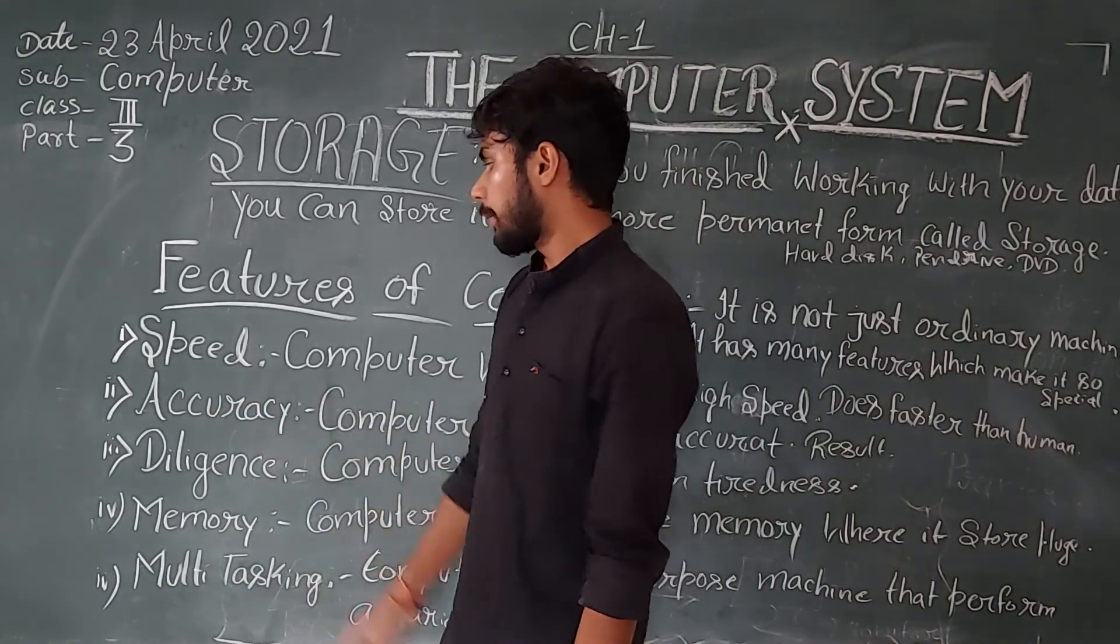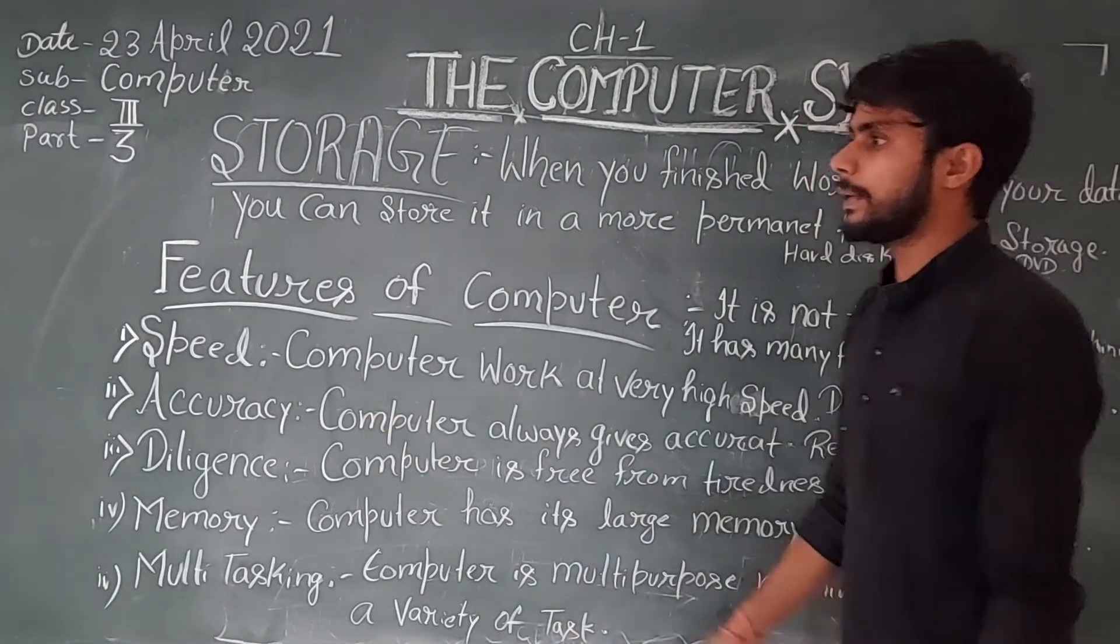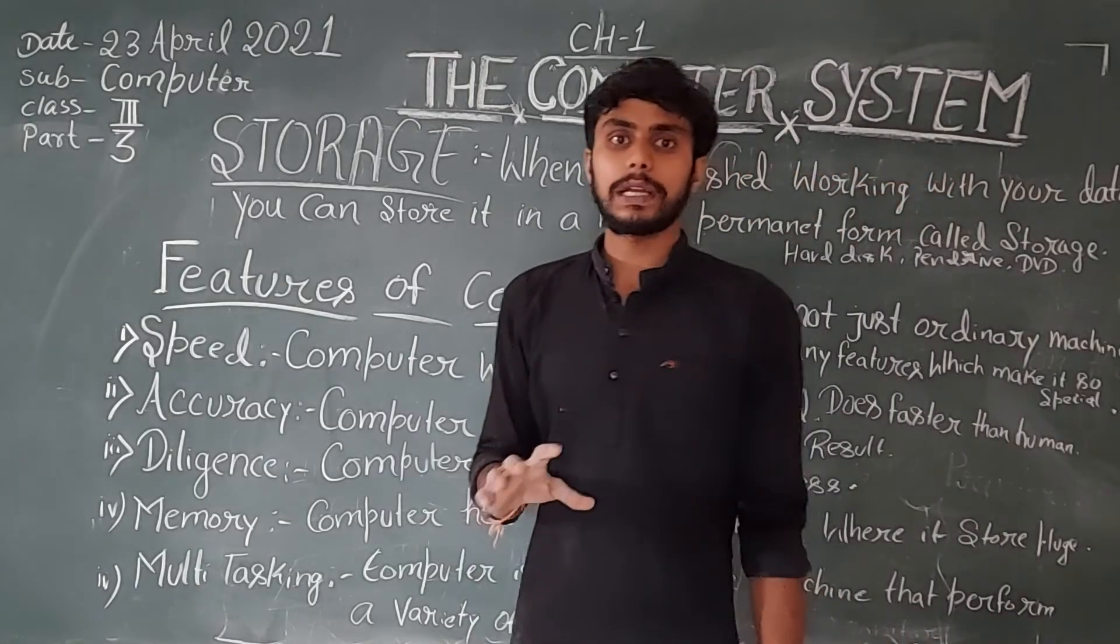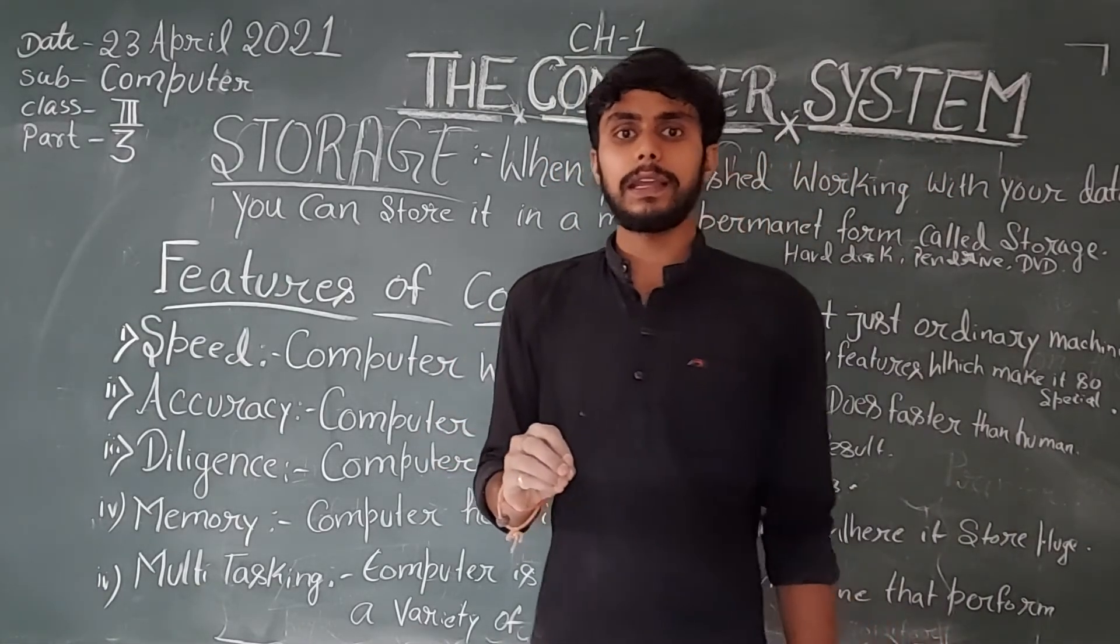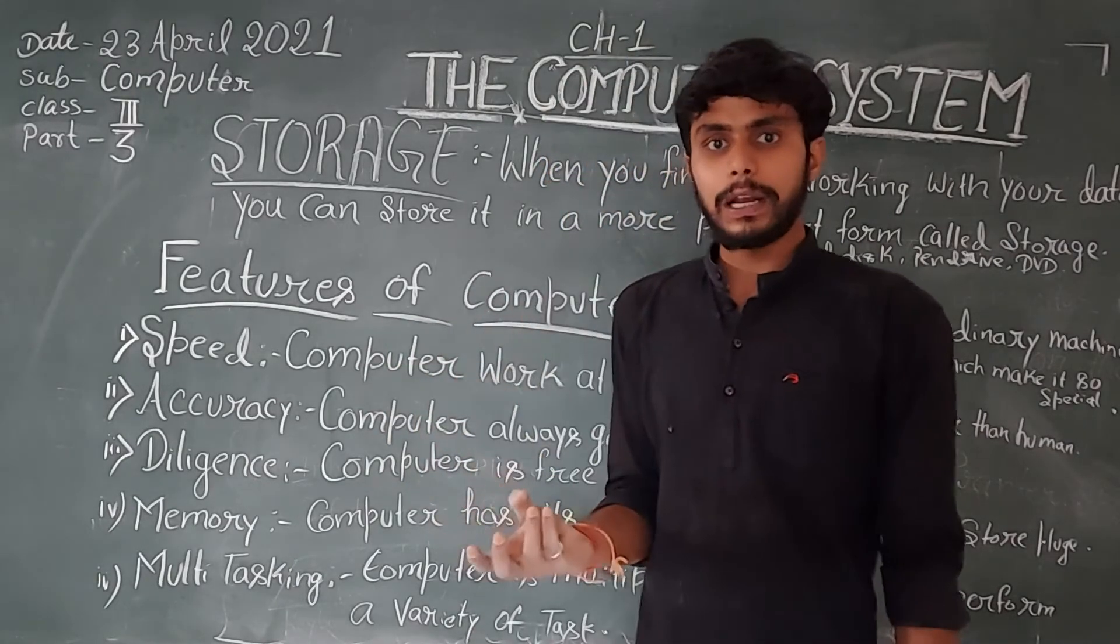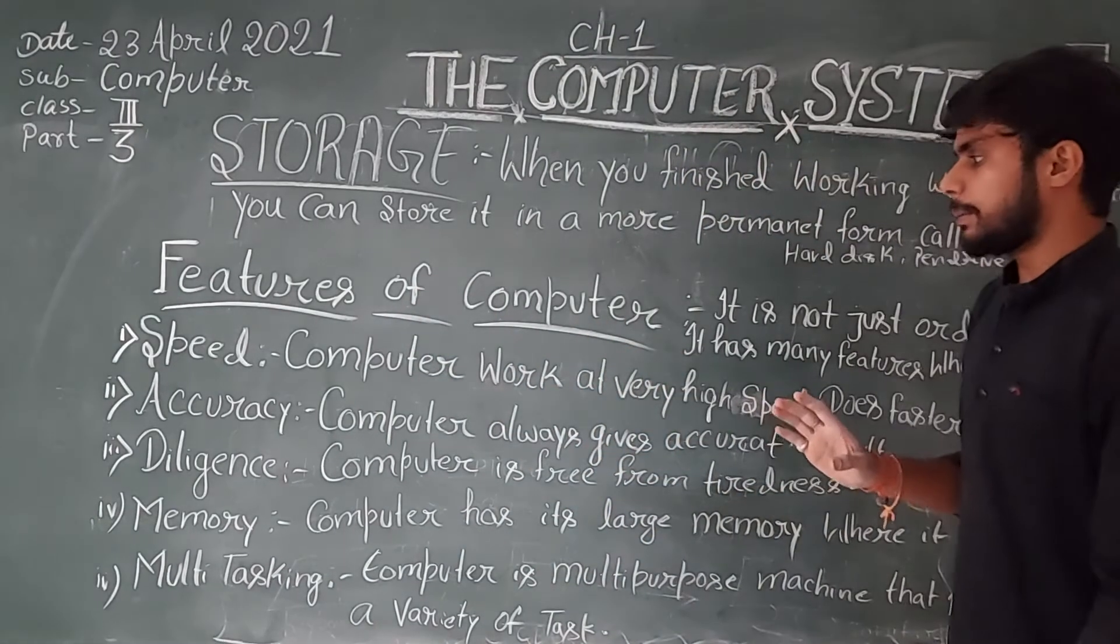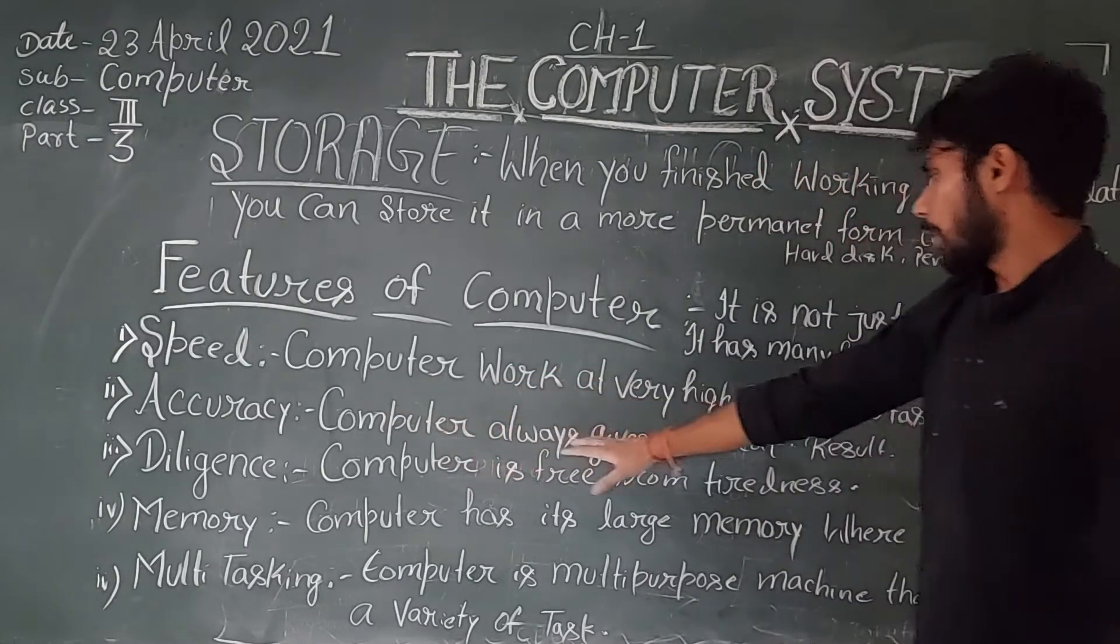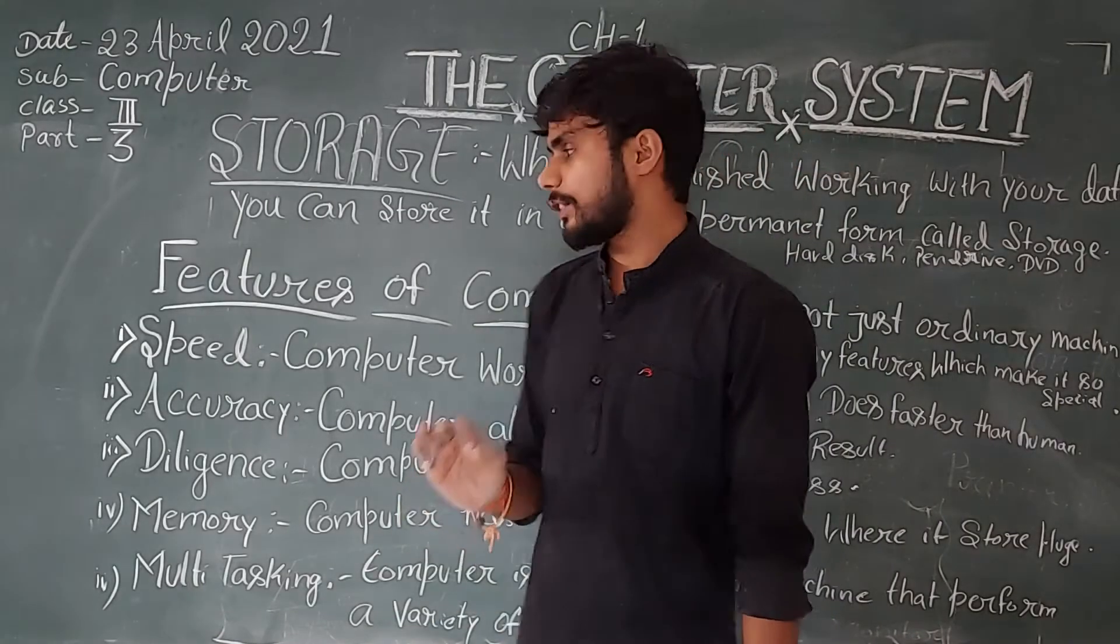Second, we have features of the computer, that is accuracy. What is accuracy? The computer is 100% accurate. If you are giving instructions to the computer correctly, then you can get the accurate result. The computer never makes mistakes. There is always accuracy. The computer always gives accurate results. Whatever you do on the computer, you can get the accurate result.